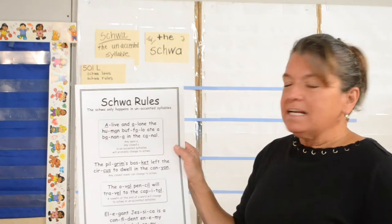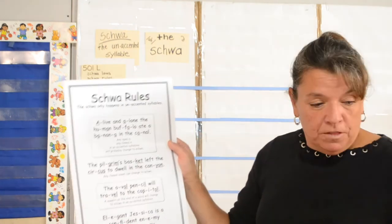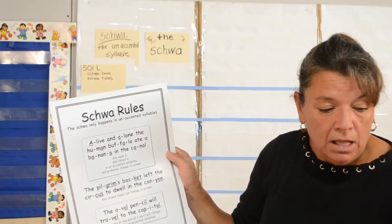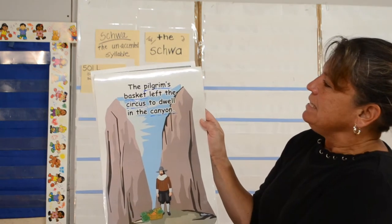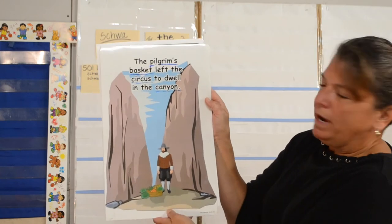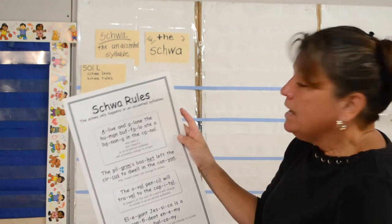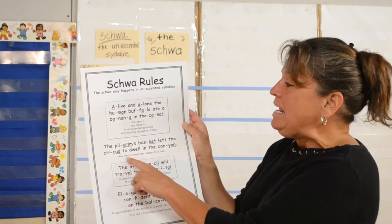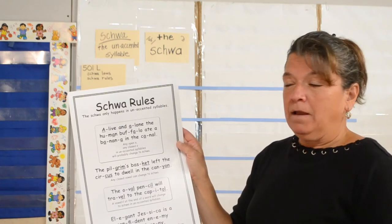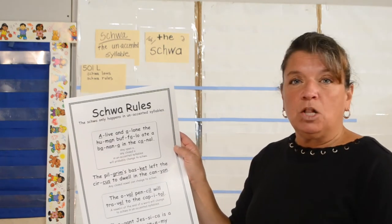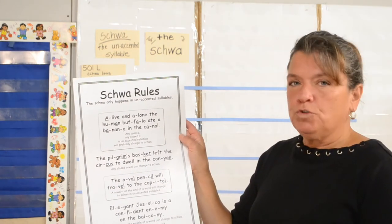The second sentence: 'The pilgrim's basket left the circus to dwell in the canyon.' This sentence is used for the schwa in the respect that any closed vowel can change to the schwa — closed A, closed E, closed I, closed O, closed U. Any closed vowel can change to the schwa.